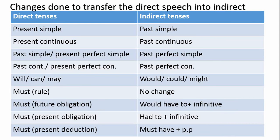Let's see the changes in tenses from direct into indirect sentences. Present simple → past simple. Present continuous → past continuous. Past simple or present perfect simple → past perfect simple. Past continuous and present perfect continuous → past perfect continuous. Will → would, can → could, may → might.